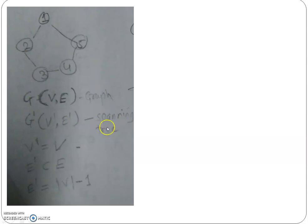If I want to represent the spanning tree for this graph, I will represent it as G-dash of V-dash comma E-dash. If I want to compare the edges and vertices of the graph and the spanning tree: V-dash equals V, meaning the vertices of the spanning tree equal the vertices of the graph. But E-dash is a subset of E — the edges of the spanning tree are a subset of the edges of the graph.